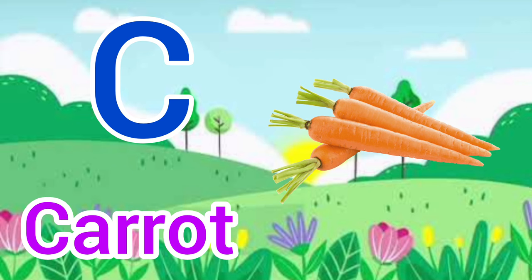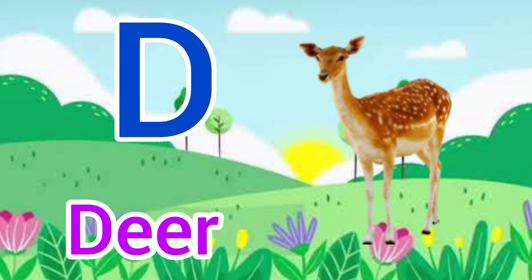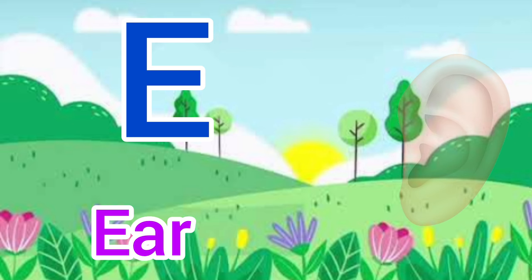D for deer, deer means hiran. E for ear, ear means kaan.